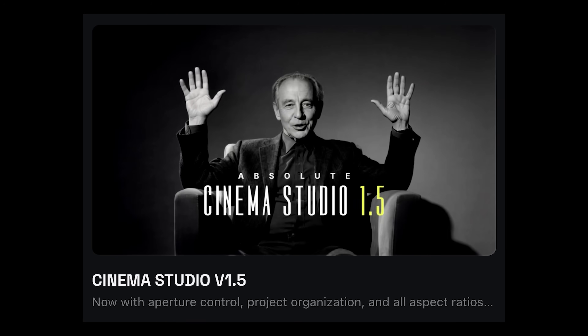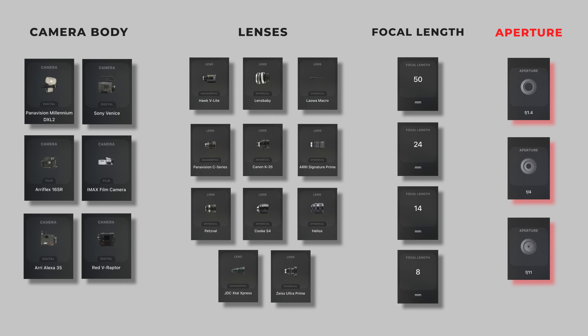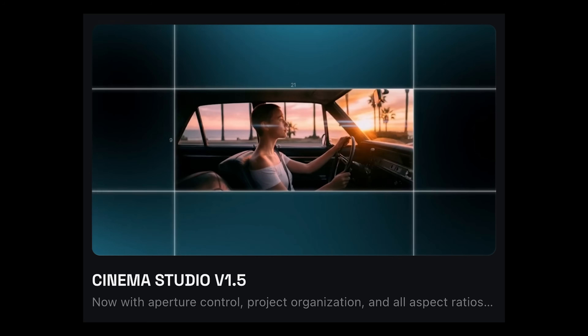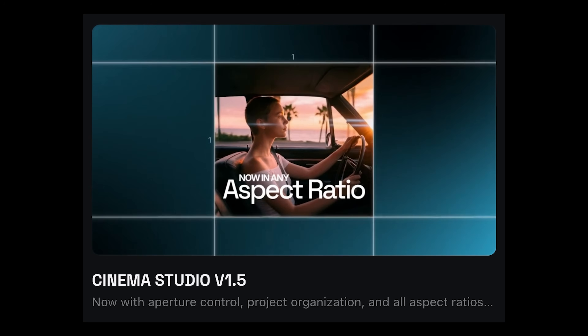Now let's have a look at Cinema Studio version 1.5. Since Cinema Studio released, I was incredibly impressed with it, and I've already made a video which focuses a lot on that, so I'll leave a link below. They've now added some highly recommended updates — we still have all the incredible cameras, lenses, and focal lengths to use, but now they've added aperture control, which I thought was a no-brainer in the first place, but it's really nice to have. They've also added loads of different aspect ratios, so if you want to create cinematic shots in a 9x16 smartphone aspect ratio, now you can. And they've added project organization as well.